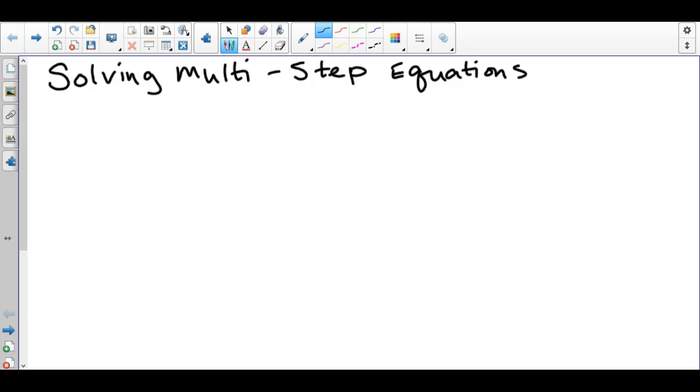This video will be about solving multi-step equations. When you're solving multi-step equations, you'll need two skills: combining like terms and distribution. When you're combining like terms, you look for things that have the same letter. For example, 3x and 2x could combine together, or if we added like a 5 on the end, 7 and 5 don't have any letters so they are also like terms. 3x and 2x are like terms because they have the exact same letter. 7 and 5 are like terms because they don't have any letters.